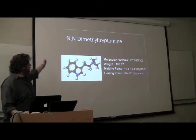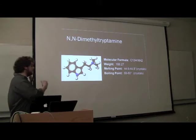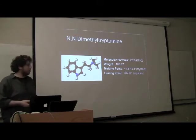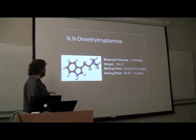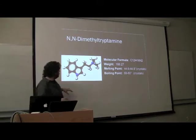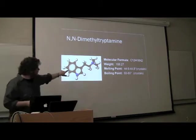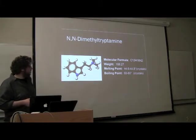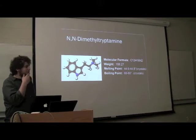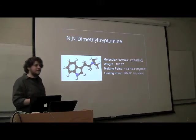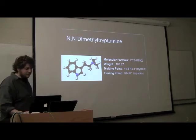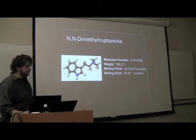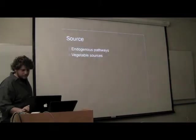Dimethyltryptamine is a tryptamine, which is a class of neurotransmitters based around the tryptophan molecule. Its melting point is 44.6 degrees Celsius, and its boiling point is 60 to 80 degrees. Keep those in mind if you're ever in possession of the stuff — they're important for not ruining the substance.